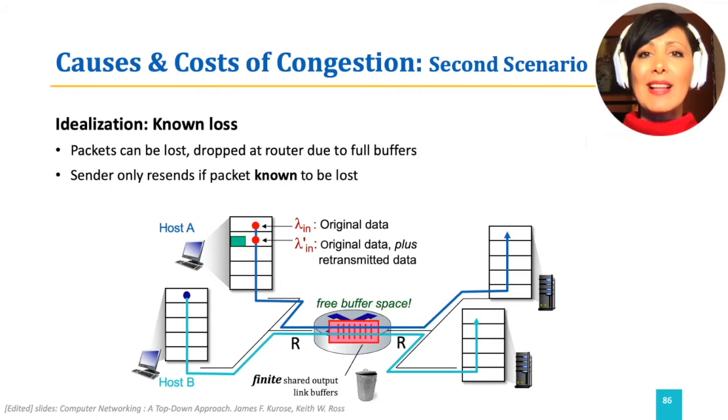One step closer to reality. In this step, assume sender does not have information about the availability of the buffer in the router. Therefore, loss can happen.